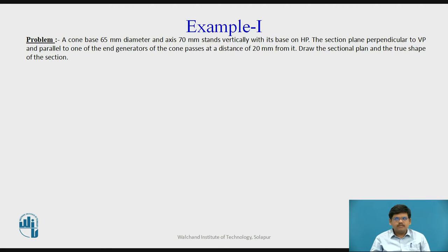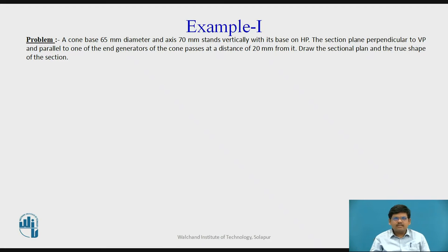Moving further with an example, we have a cone. Its base is 65 mm diameter and axis 70 mm. It stands vertically with its base on HP. So, a cone is kept straight — its axis is vertical and it is resting on its base in HP.